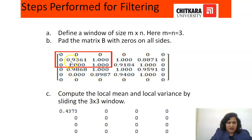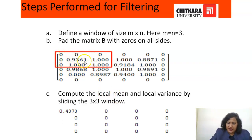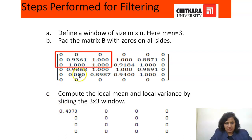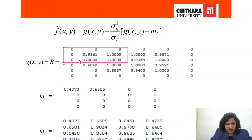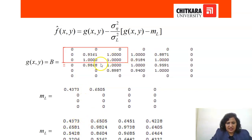We will take a 3x3 window. For the first pixel of matrix B, take a 3x3 neighboring window and compute its local mean — just add the nine pixels and divide by nine. You will get 0.4373. In the same way we will compute the local mean for the second pixel by taking the next 3x3 window and computing its local mean. We will get the mean of each and every pixel by taking the neighborhood window.